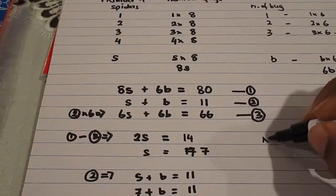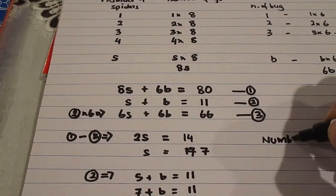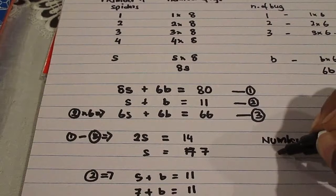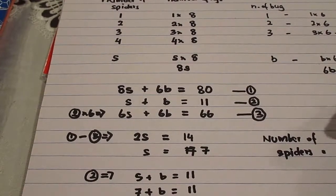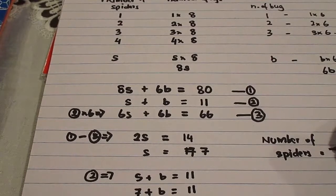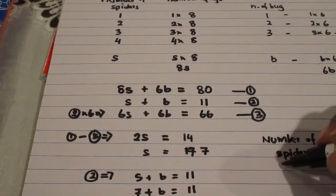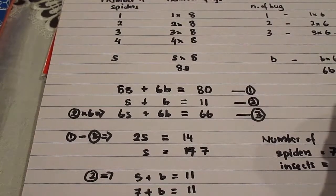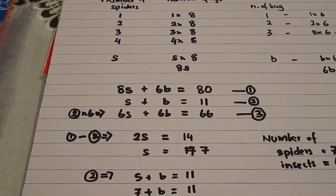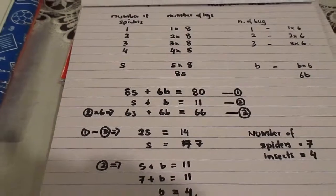So we can now write down the answer. Number of spiders is 7 and insects is 4.